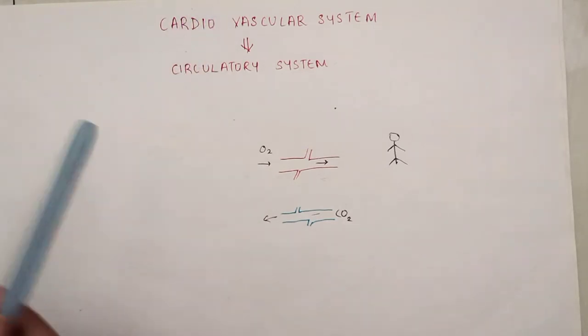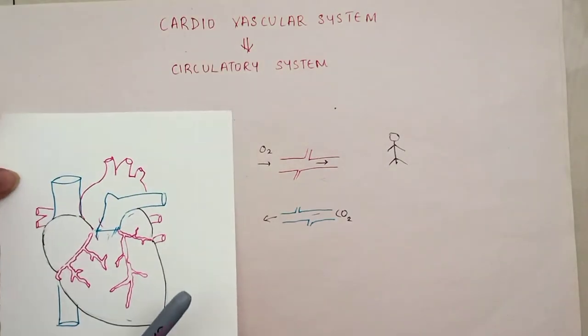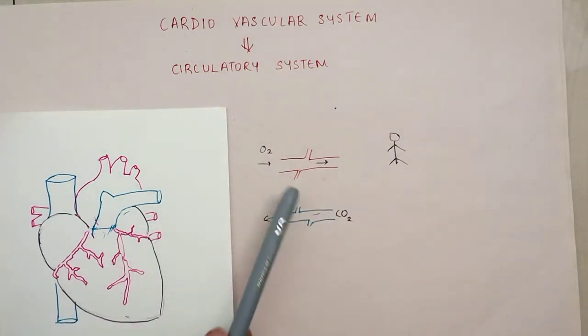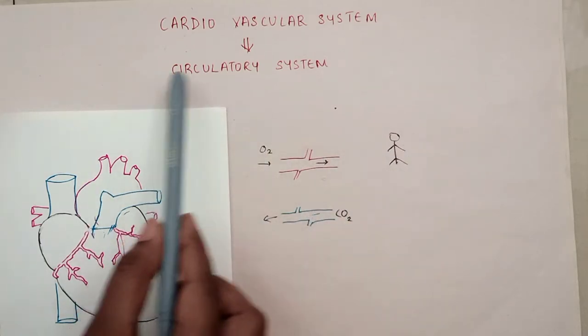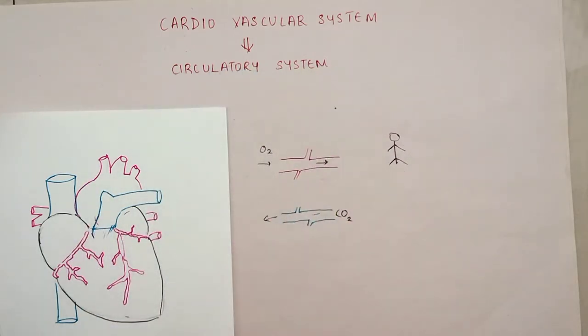Cardio refers to the heart and vascular refers to the capillaries, arteries, and veins in our body. Together, the heart and vessels form the circulatory system.